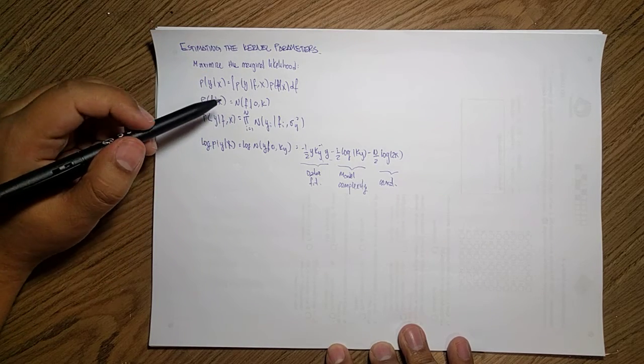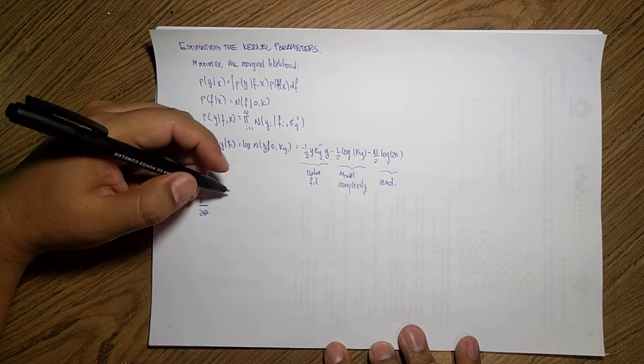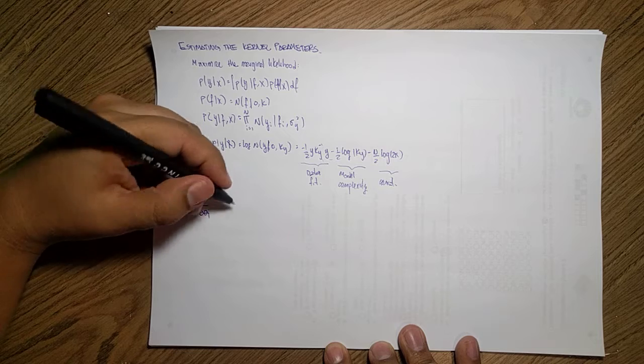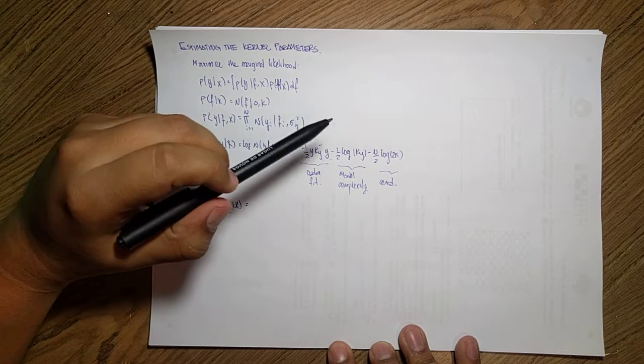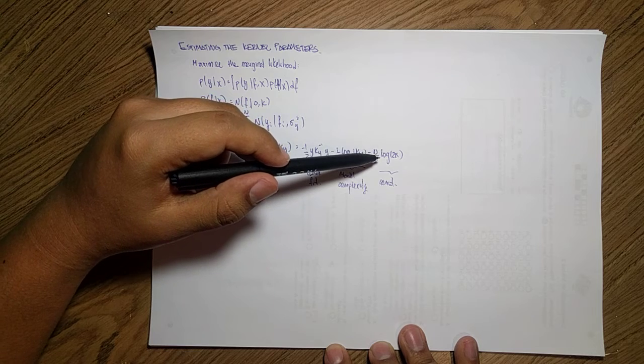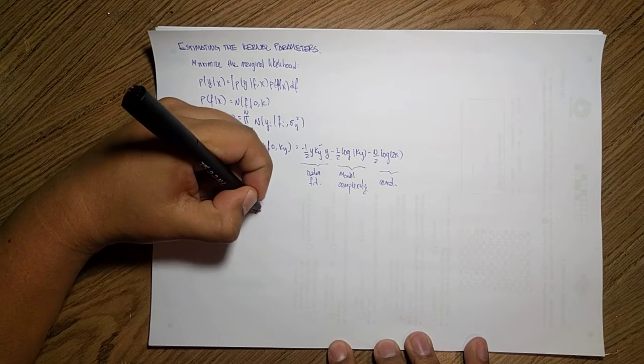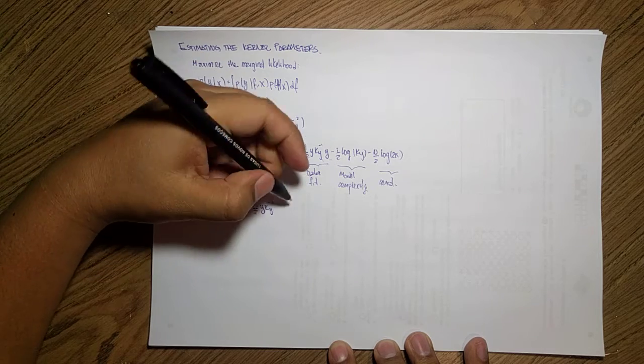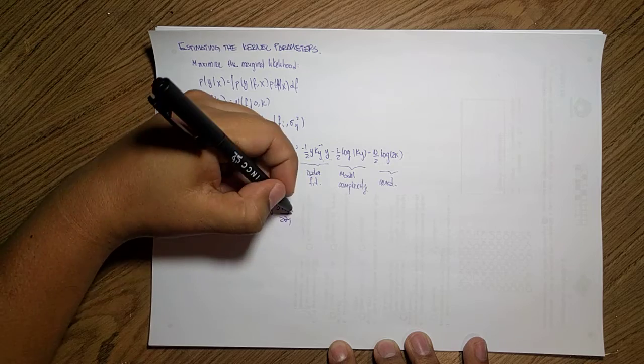If we use this, the whole idea is to take the partial of this log with respect to the parameters. Let's say I want to do it with respect to the jth parameter. This parameter corresponds to the kernel. I want to take the derivative with respect to p(y given x). It's just a matter of doing the derivative. This 2 pi is constant, so I can zero it out. The only terms that have the k are these two. The first one is just 1/2 y transpose Ky inverse derivative times Ky inverse y.